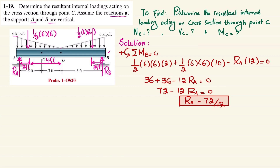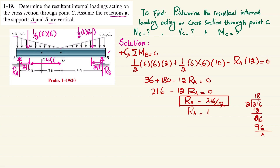One mistake was made: the second term is not 72 but rather (1/2)(6)(6)(10) = 180, and the first term (1/2)(6)(6)(2) = 36, giving 36 plus 180 equals 216. So the equation becomes 216 minus 12·RA equals zero, and therefore RA equals 216 divided by 12, which equals 18 kips.